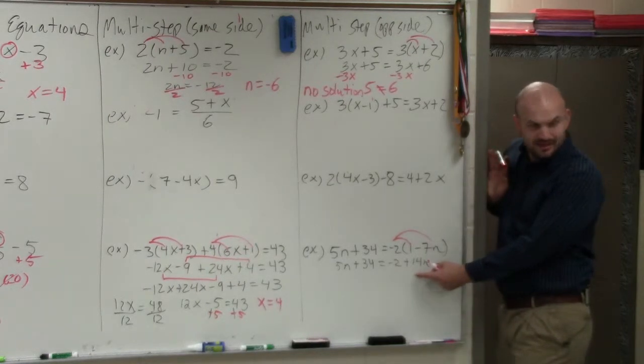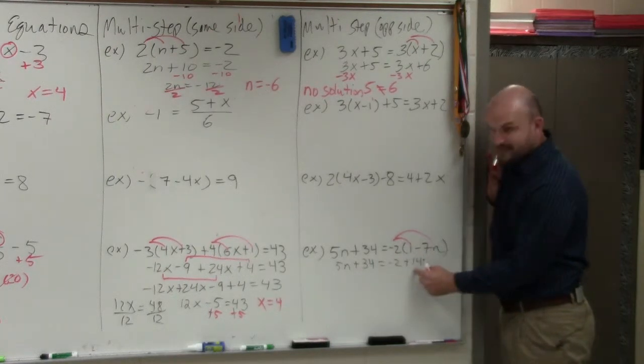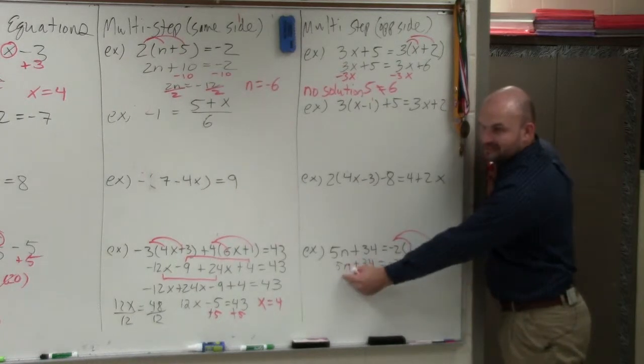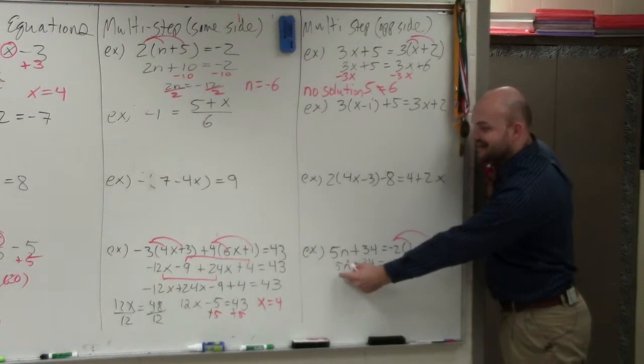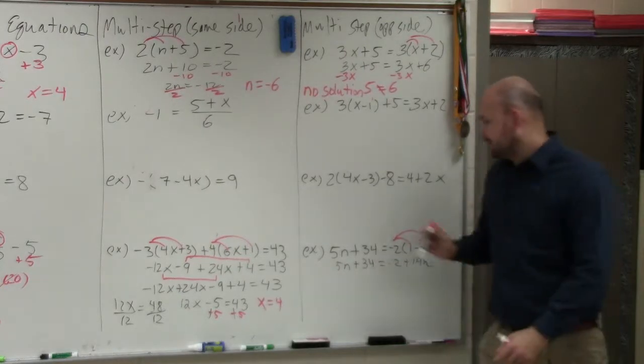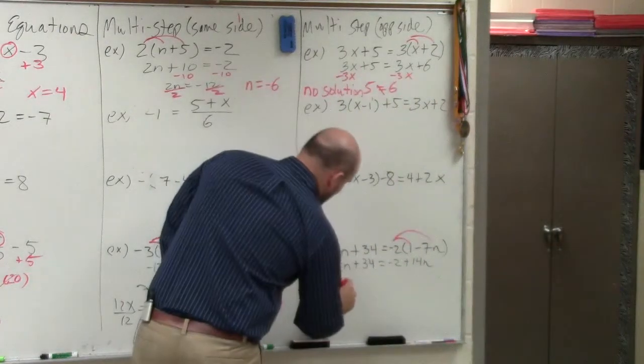Does everybody see that? If you subtracted 14n, that would eliminate the n on the right side, but that would leave you with a negative 9n on the left side. Did I say 7 again? I don't know. So let's subtract 5n.